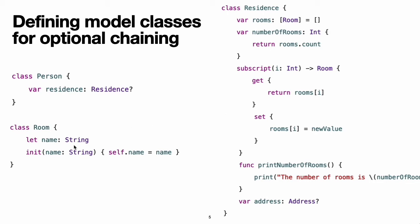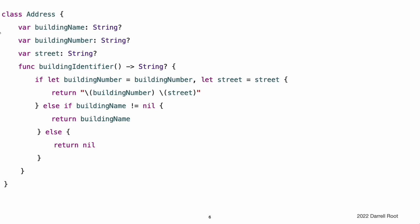The room class used for the rooms array is a simple class with one property called name and an initializer to set that property to a suitable room name. The final class in this model is called address. This class has three optional properties of type optional string. The first two properties, building name and building number, are alternative ways to identify a particular building as part of an address. The third property, street, is used to name the street for that address. The address class also provides a method called building identifier, which has a return type of optional string. This method checks the properties of the address and returns building name if it has a value, or building number concatenated with street if both have values, or nil otherwise.